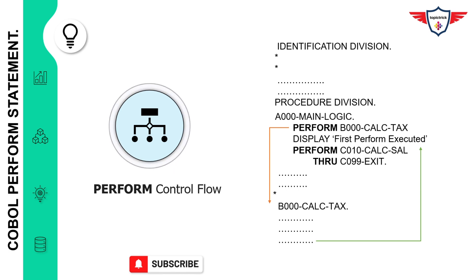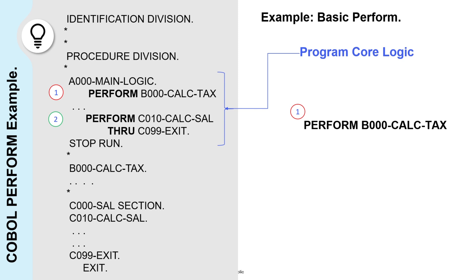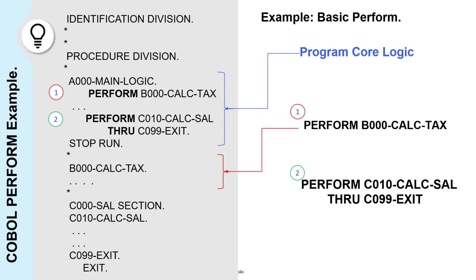Now let's look at a sample COBOL program using the perform statement. The first perform executes paragraph B000-CALC-TAX. The second perform executes a series of paragraphs from C010-CALC-SALARY through C020-EXIT using the THROUGH option. The first statement is highlighted in red and the second in green, so you can clearly see which individual or series of paragraphs each statement will execute.